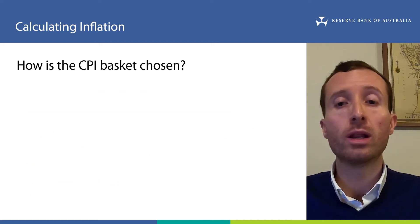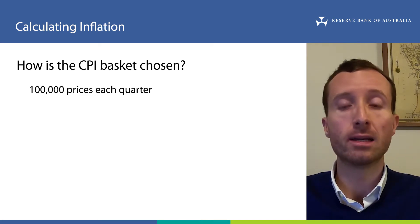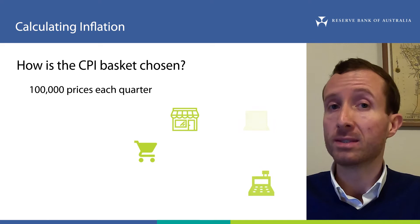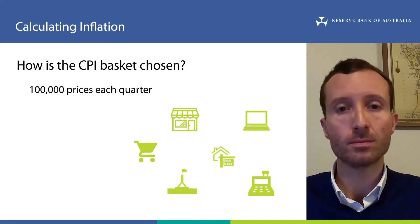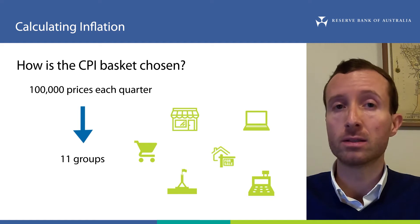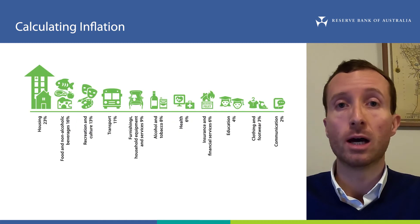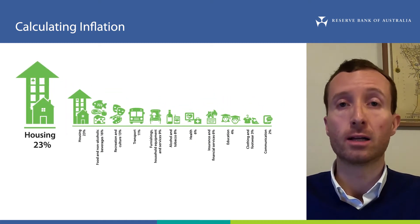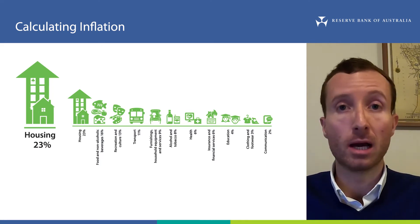In total, the ABS collects around 100,000 prices each quarter from a wide range of sources, including retailers, supermarkets, department stores and websites, government authorities, real estate agents, and many more. These thousands of items are included in 11 high-level groups, which represent the areas where Australian households spend their income. Currently, the largest group is housing, which includes items like rent payments and electricity bills. This group represents almost one quarter of what the average household spends in Australia, and that is its weight in the CPI basket.